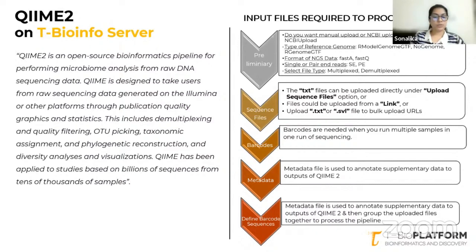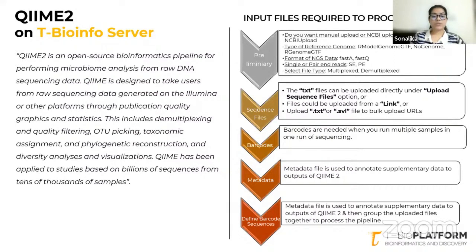This includes demultiplexing and quality filtering, OTU picking, taxonomic assignment, phylogenetic reconstruction and diversity analysis, along with visualizations. QIIME2 has been applied to studies based on billions of sequences from tens of thousands of samples.